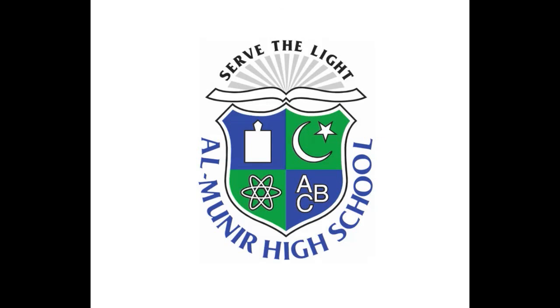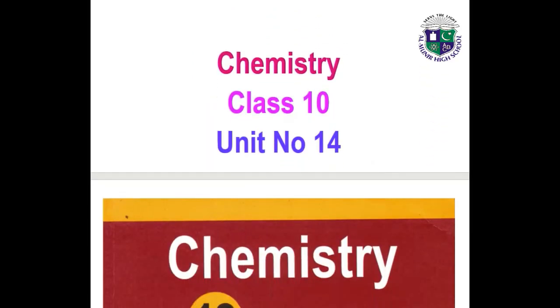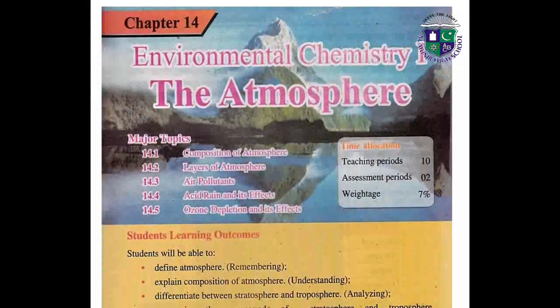Welcome to Al-Muneer High School E-Learning System, Class 10. This is your Chemistry lecture. Today we are going to discuss Unit number 14. This is the title page of your Chemistry book. Unit number 14 is about Environmental Chemistry Part 1. The main topic is the atmosphere. In this unit we are going to discuss the composition of atmosphere, layers of atmosphere, air pollutants, acid rain and its effects, and ozone depletion and its effects.